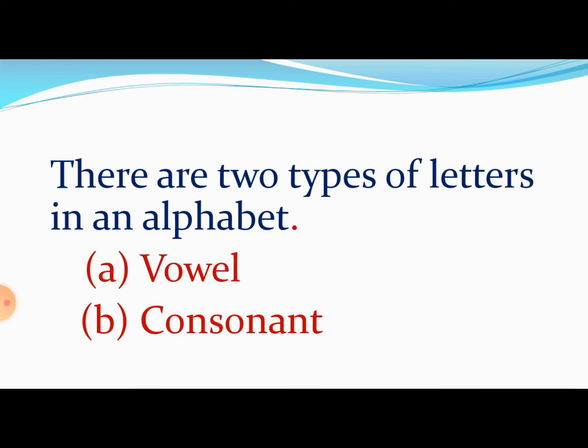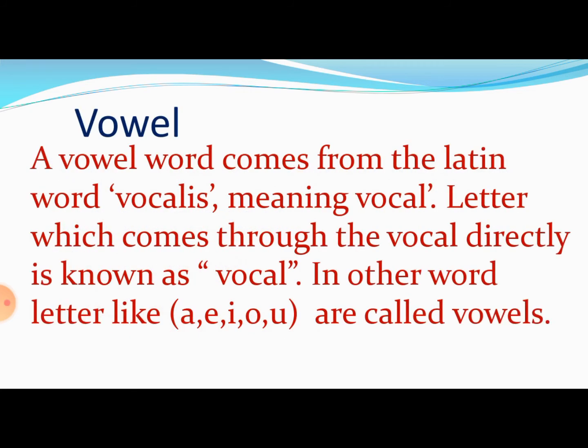Toh sabse pahle hum baat karte hain — vowels kya hote hain? A vowel word comes from the Latin word; vowel meaning is 'vocal'. Means, vowel word kahān se āyā hai? Latin word se āyā hai. Vowel is ho gaya hai — vowel ka meaning hai 'vocal'. So, a letter which comes through the vocal directly is known as a vowel. Voh letter jo hamare directly vocal se pass hote hain, unhē hum vowel kehte hain.